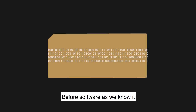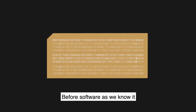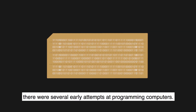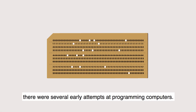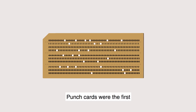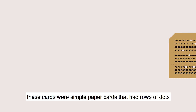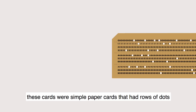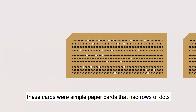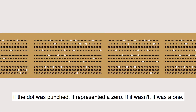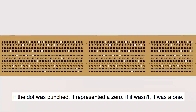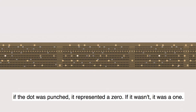Before software as we know it, there were several early attempts at programming computers. Punch cards were the first — simple paper cards that had rows of dots. If the dot was punched, it represented a zero; if it wasn't, it was a one.